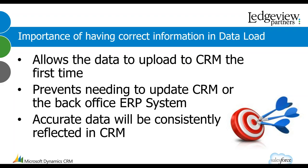Next we'll jump into the importance of having correct information in your data load. When you have correct information the first time, it allows data to upload to CRM without errors — you won't receive an invalid records report with items to fix. So if a user had a really big order yesterday, they'll see it the following day because it went in that nightly data load. Accurate data will be consistently reflected in CRM — orders and new accounts will appear as soon as the next day.